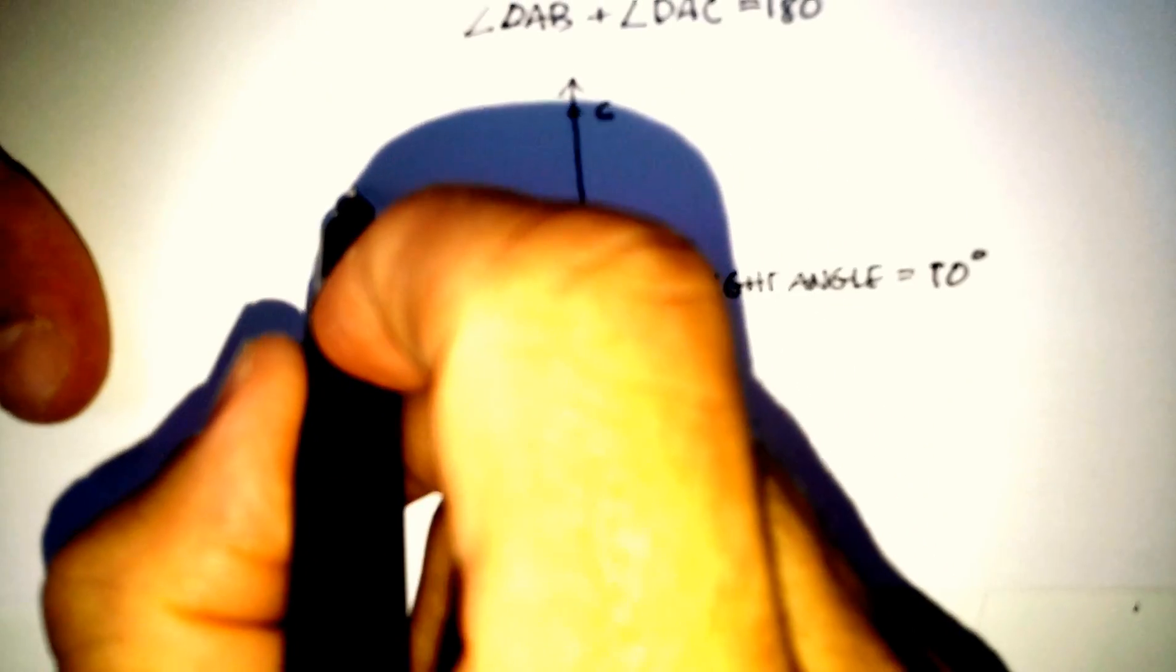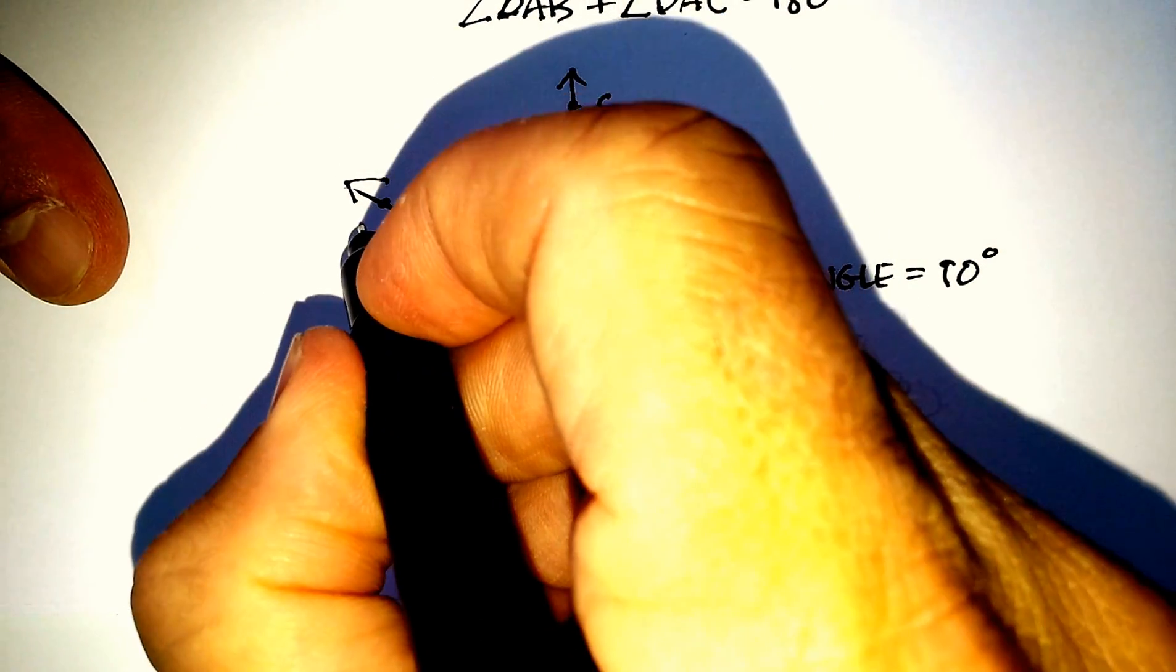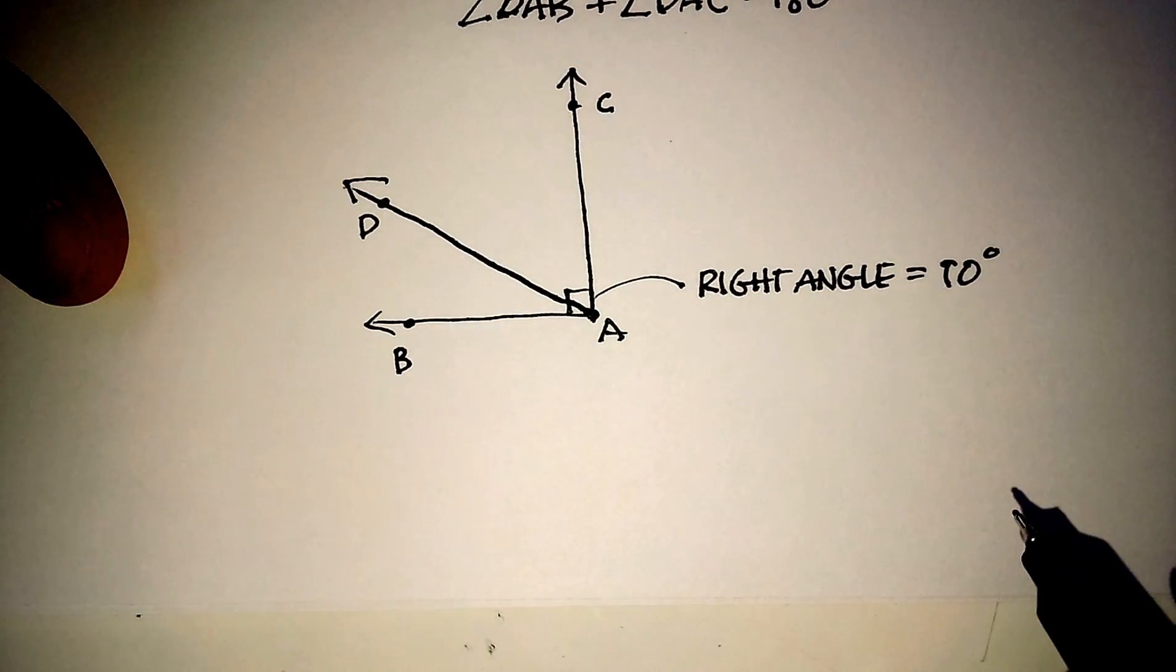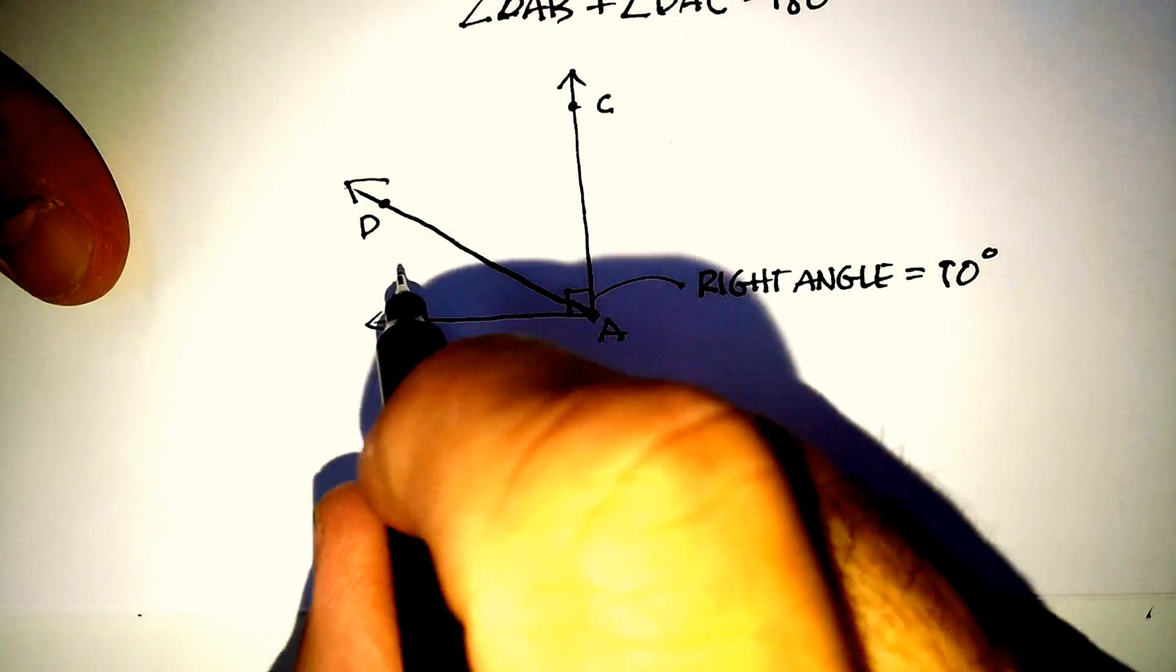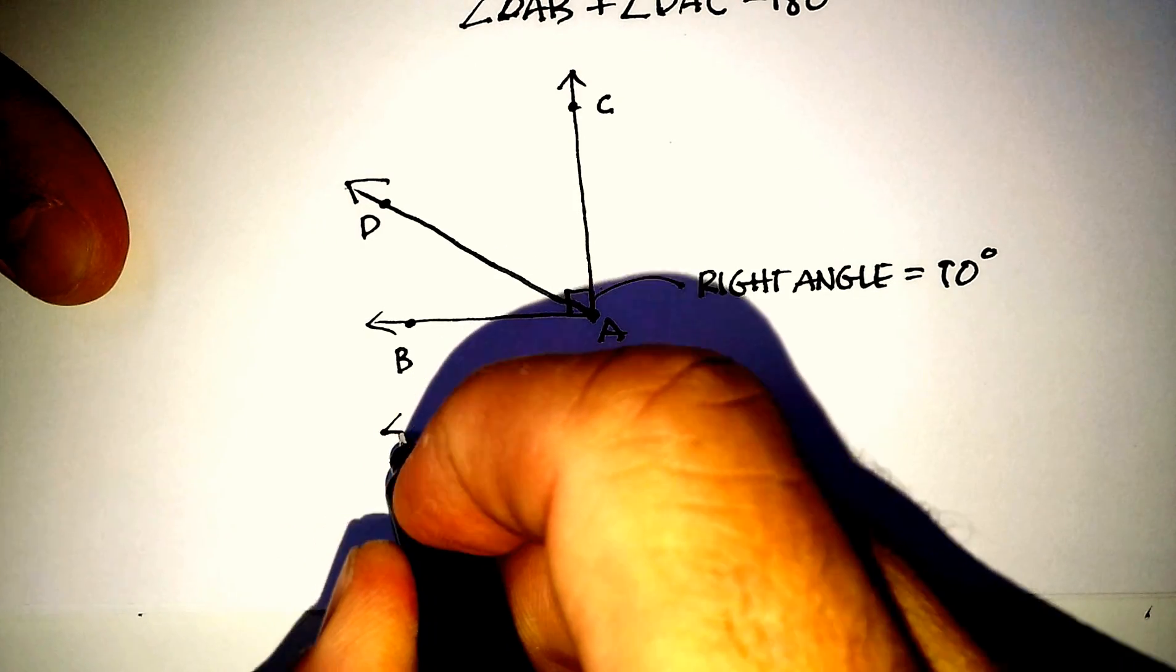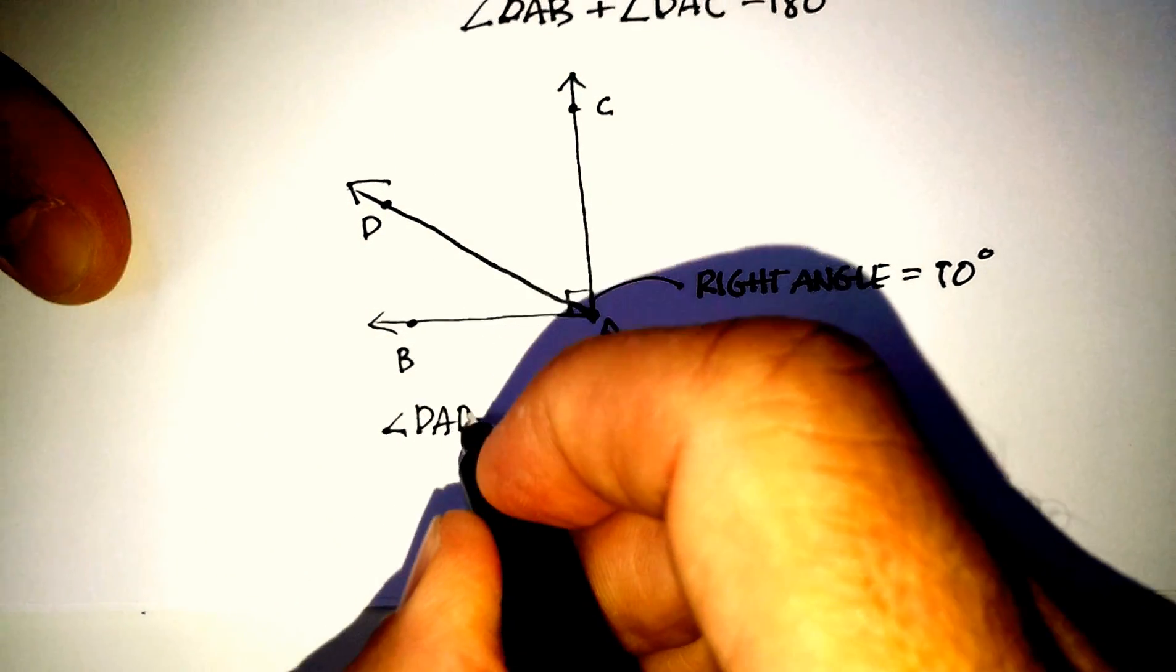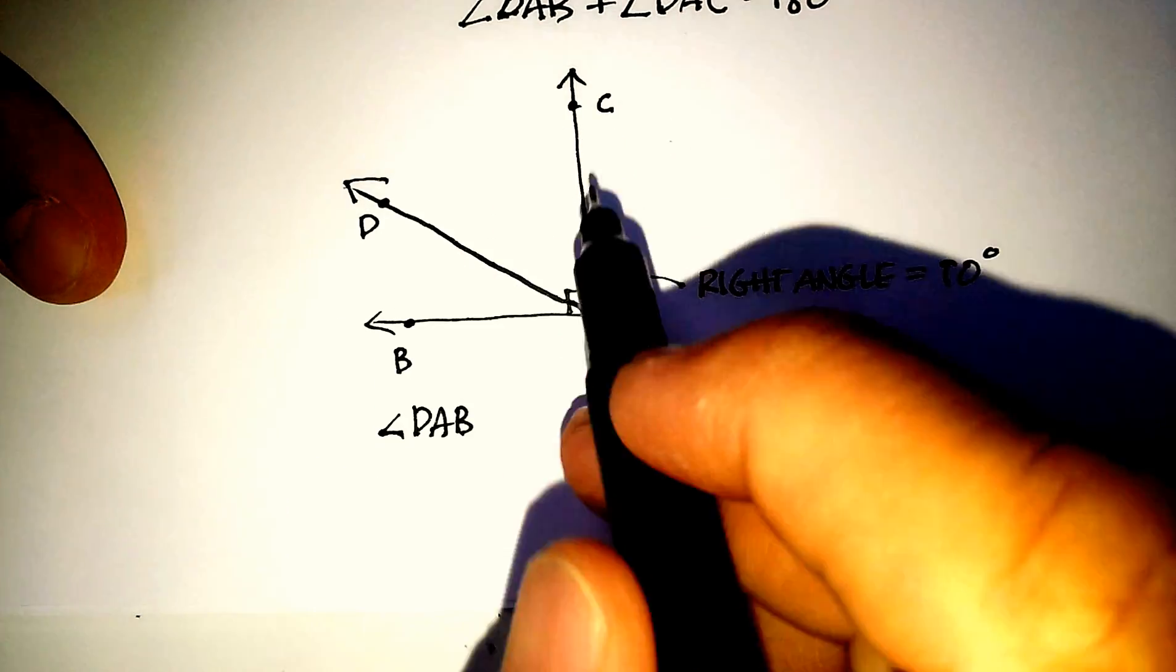I'm going to do one last thing, and that's draw another ray coming out from A. And again, we'll call this one D. So again, these are adjacent angles. So angle DAB in this case is adjacent to angle DAC.